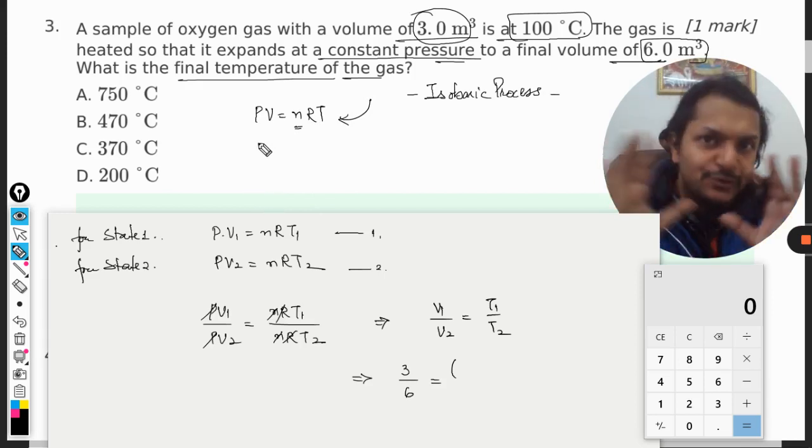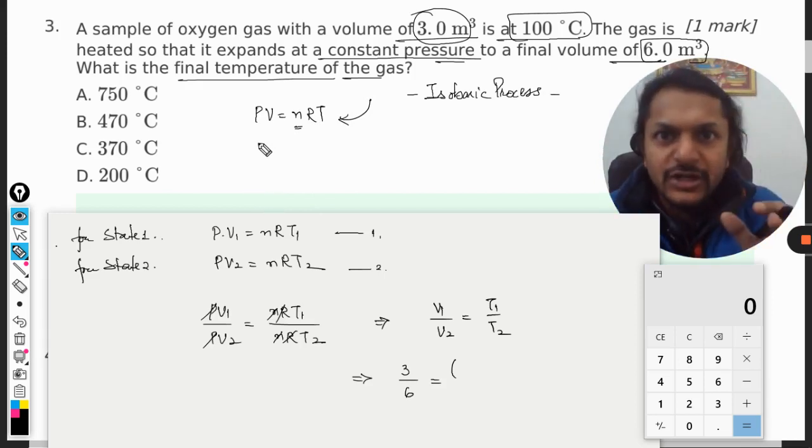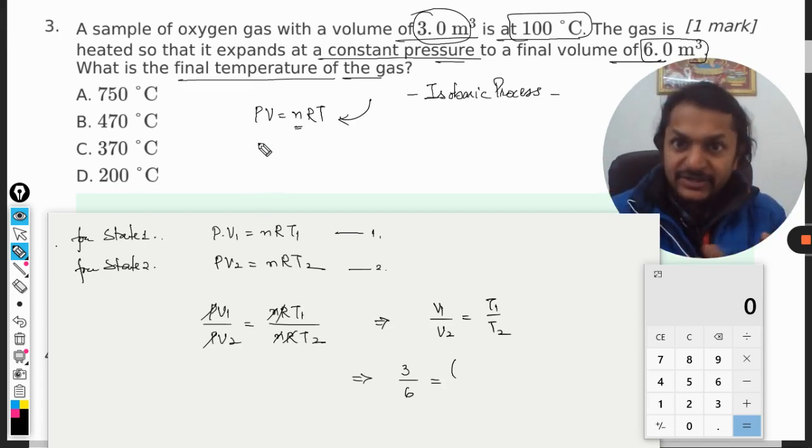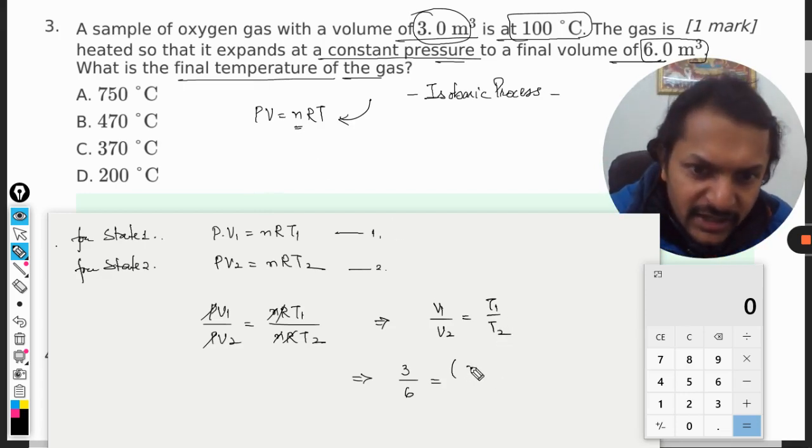So when we take in absolute terms, we write those things in capital letters. So this temperature has to be in Kelvin. So it will be 273 plus 100 divided by T, and now we need to find T here.